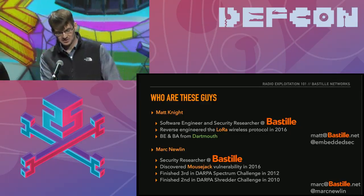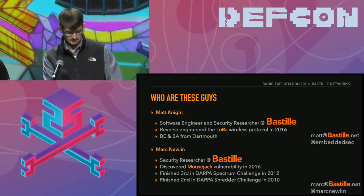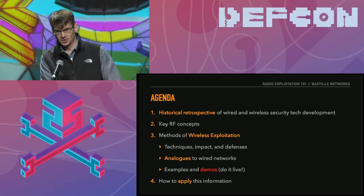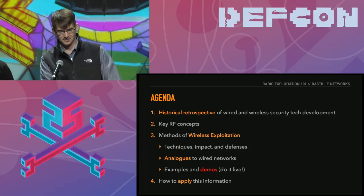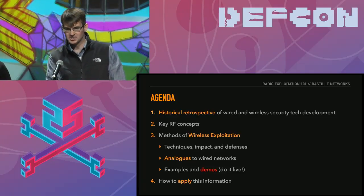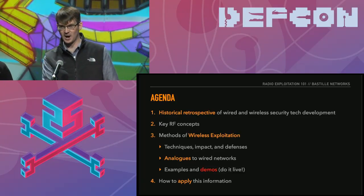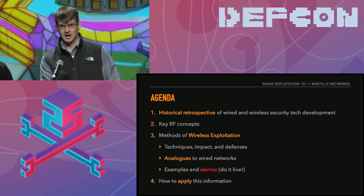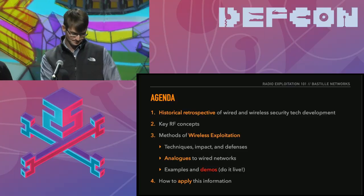Looking at what's happened since the 2000s, the map of protocols we're concerned with is a lot more complicated. You have 802.3, you can probably still find token rings some places, but additionally we have tons of wireless — all these new protocols coming online. It's a lot more complicated.